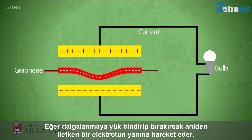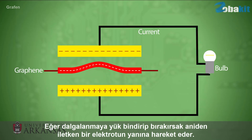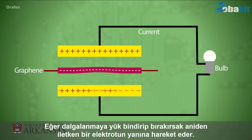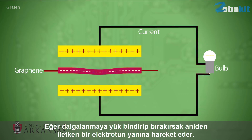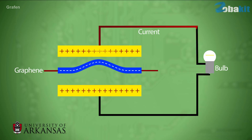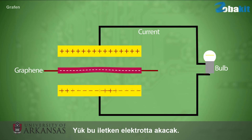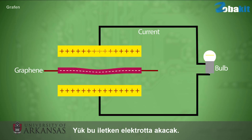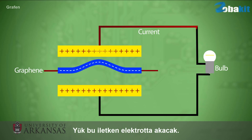If we place a charge on that ripple and it moves suddenly near a grounded conducting electrode, charge will flow in that conducting electrode, basically to screen the charge that's moving toward it.